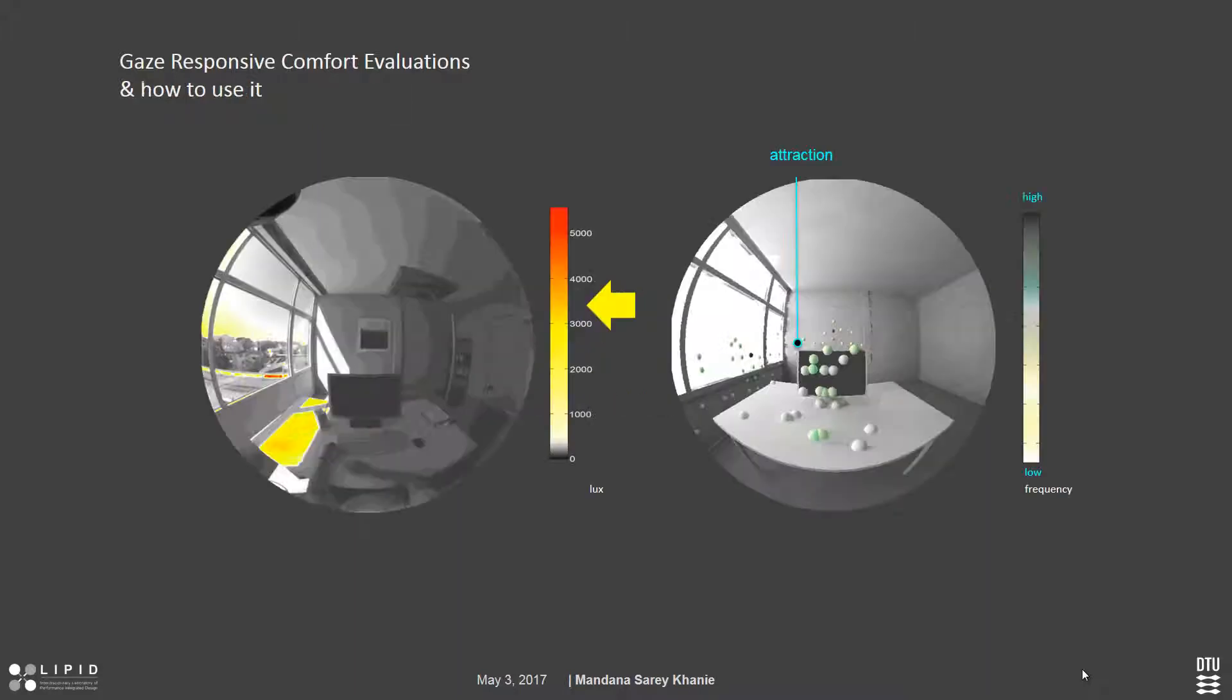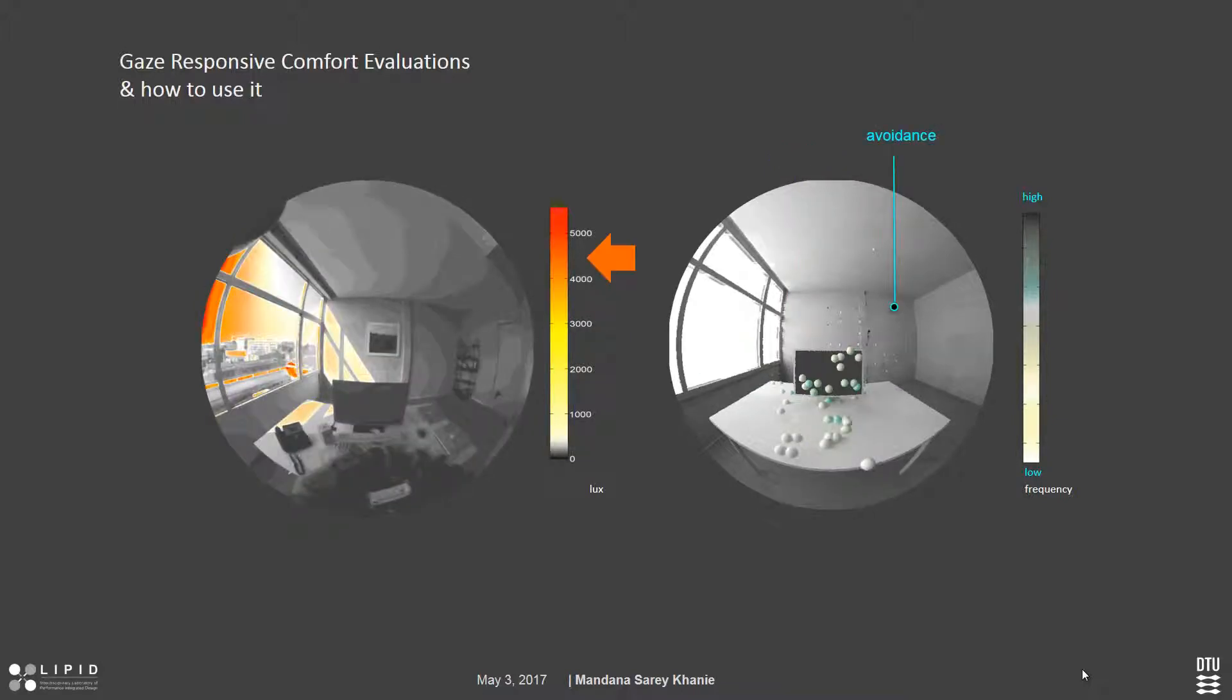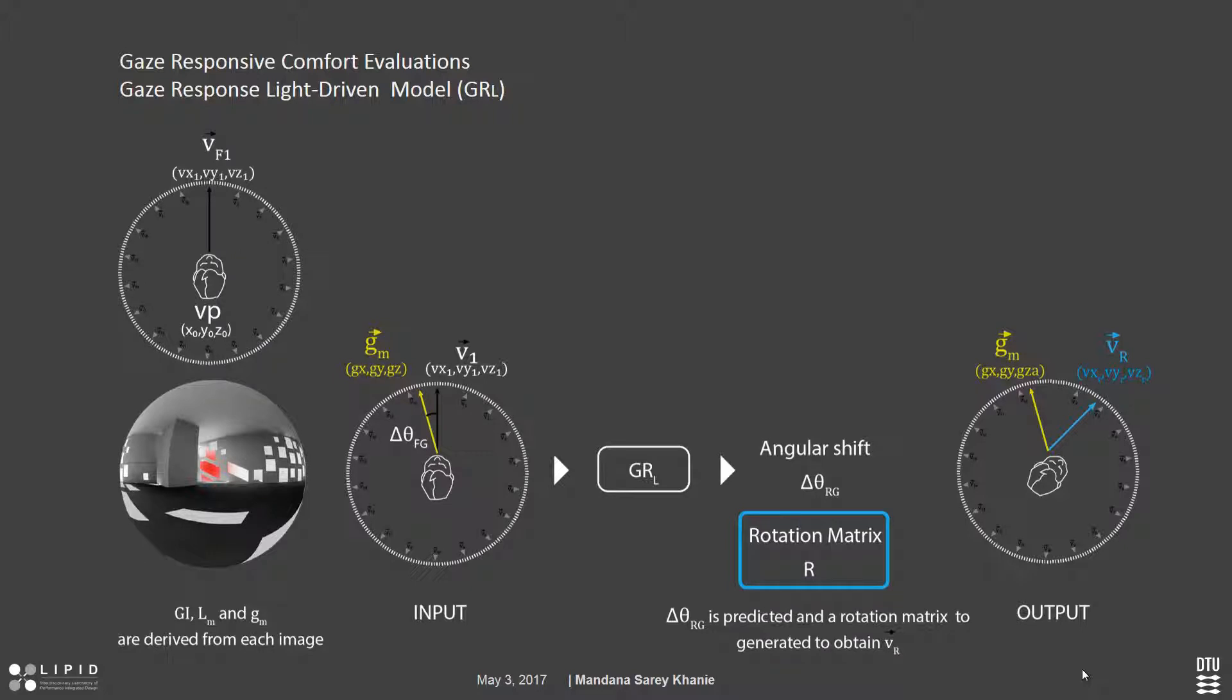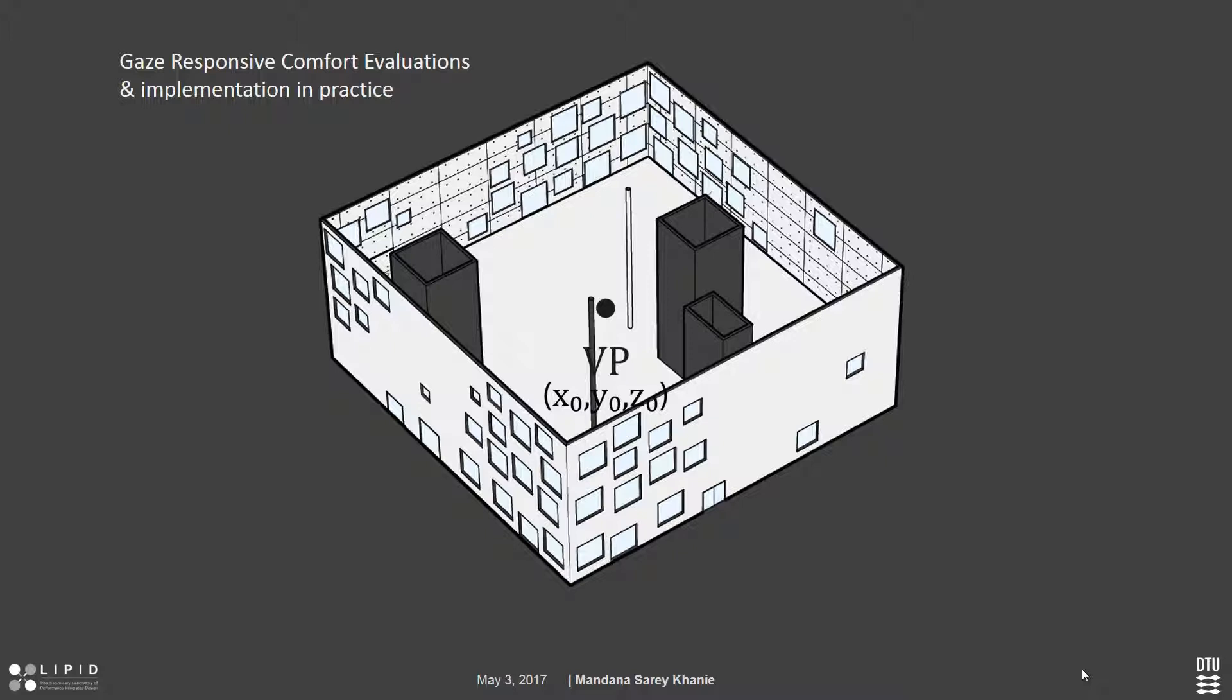And then, we saw this attraction and avoidance behavior. So how did we go about bringing this to application and bringing this to practice? A gaze model was developed, which I call gaze responsive light driven model, based off our data. So this is the layout of it, but I'm going to tell you how it actually works.